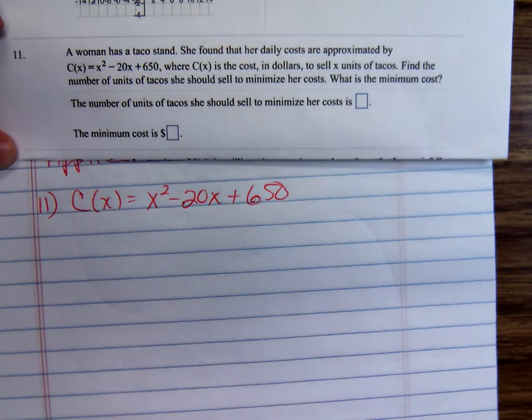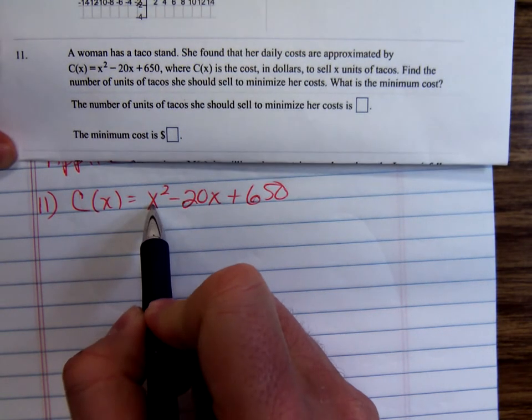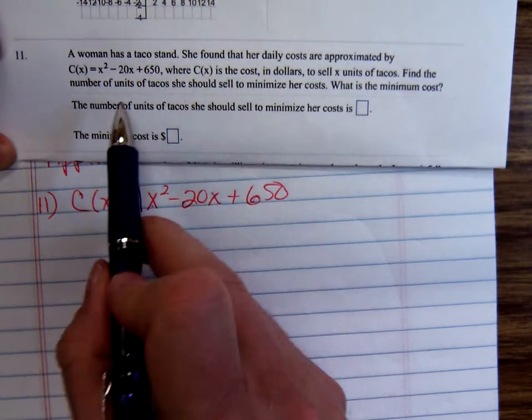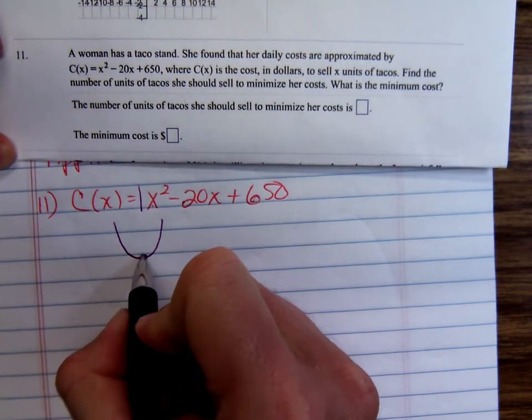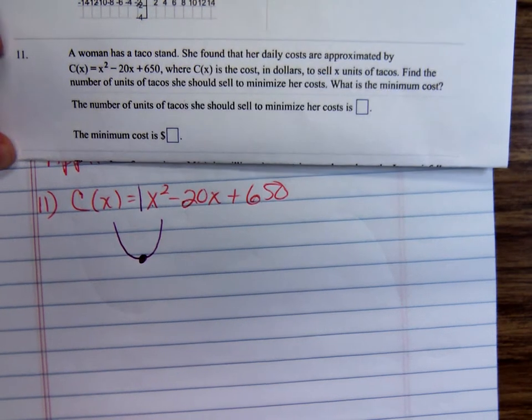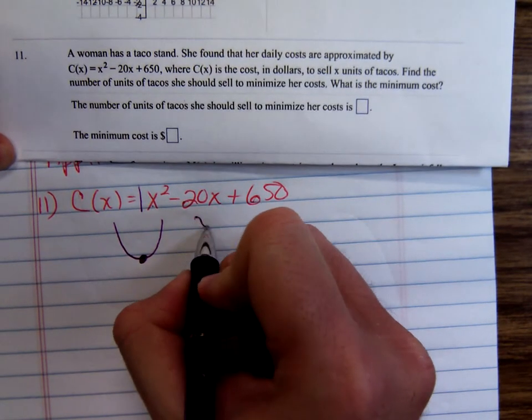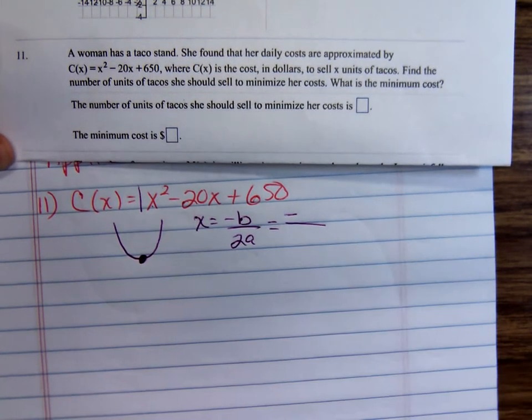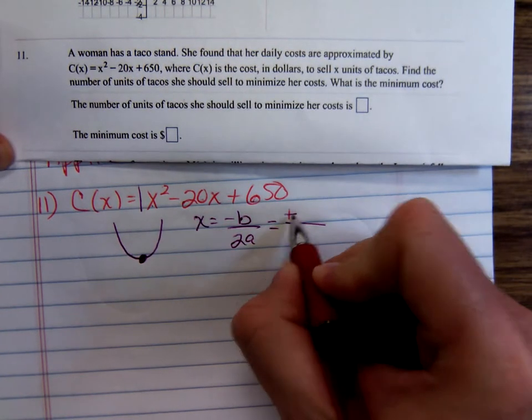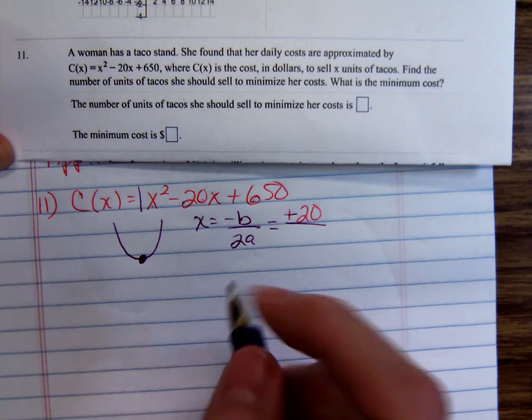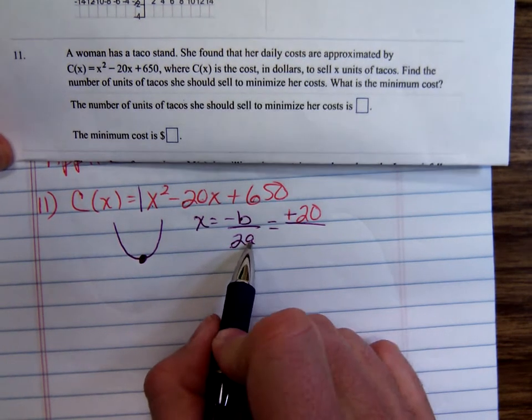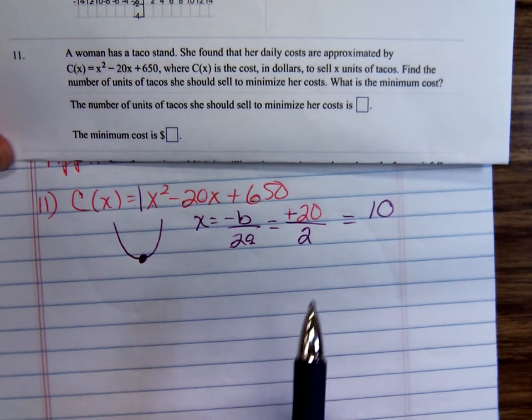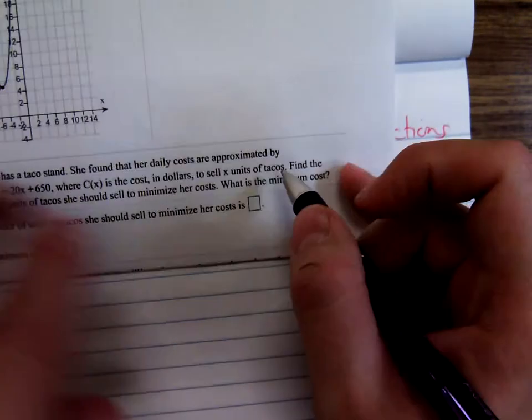This is a quadratic function opening up, and it talks about minimizing her costs. Her minimum would be at the vertex. So do the vertex formula, minus b over 2a. It'd be minus negative 20 over 2 times a. a is 1, 2 times 1 is 2. So 10.